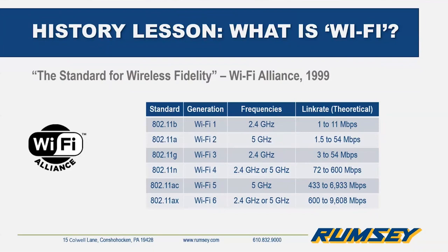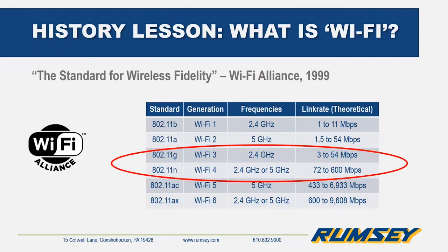Wi-Fi has gone through multiple iterations with 802.11b being the first back in 1999. This chart shows the various Wi-Fi standards and their new generation-based naming, created in 2018, along with what frequencies each standard runs upon and their theoretical link rate throughput. Currently, most commonly found in existing industrial applications is G or N, but that is rapidly changing to AC, and we will see AX in the future. There's a Wi-Fi 6 push for adoption for home devices and cell phones, but what you're going to see in the industrial space is G and N.